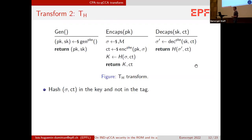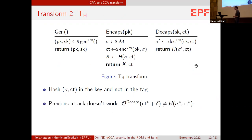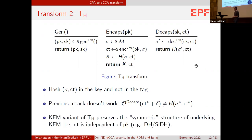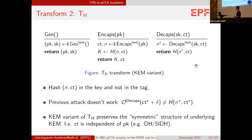We then build the second transform, where the idea is to get rid of the tag. Now we hash the seed and the ciphertext directly into the key. That's very similar to the trivial transform, except we also hash the ciphertext into the key. The previous attack no longer works because decapsulating the modified ciphertext won't return the real key in the IND-QCCA game. We can also build the KEM-to-KEM variant of this transform: we simply call the underlying encapsulation to get the ciphertext and the seed, and the key is the hash of the key material, the seed, and the ciphertext.